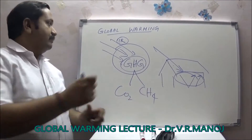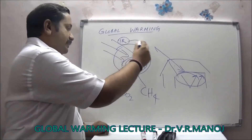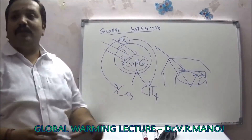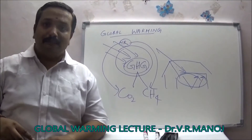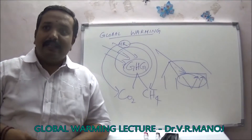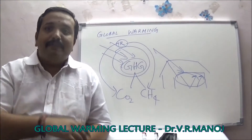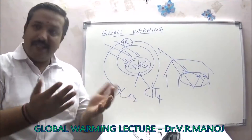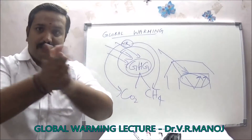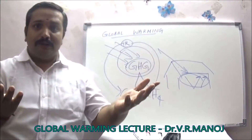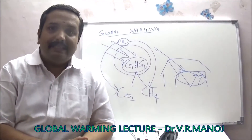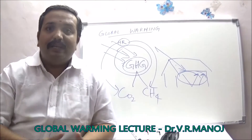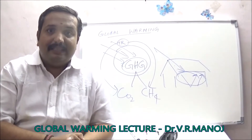When IR radiation hits either CO2 or CH4 present in the atmosphere, what will happen is these gases start vibrating. And when they vibrate, it is like rubbing your hands together — so you produce a lot of heat. This heat is what you see as a global rise in temperature.